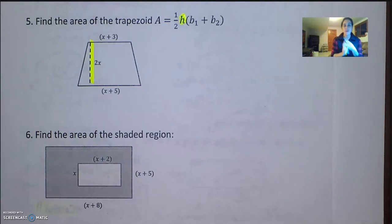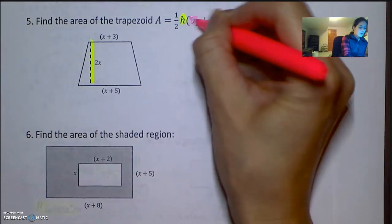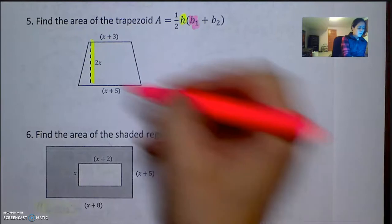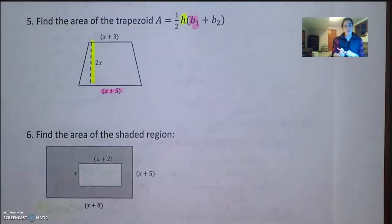Don't worry about the one half, don't worry about the height, we're just going to start with parentheses, because parentheses comes first in order of operations. Now, this is to add base 1, so base 1 is the bottom base, and we want to add it to base 2.